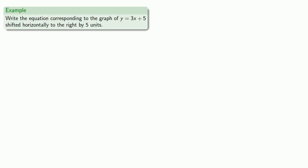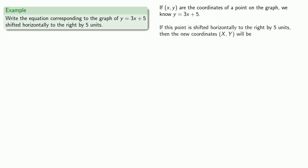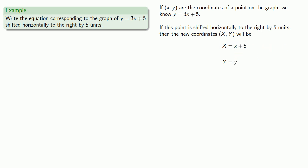Let's try to write the equation corresponding to the graph of y equals 3x plus 5 that's been shifted to the right by 5 units. If x, y are the coordinates of a point on the graph, we know that y equals 3x plus 5. If we shift this point horizontally to the right by 5 units, then the new coordinates, capital X and Y, will be where we've increased our original x-coordinate by 5, but because this is a horizontal translation, we haven't changed our y-coordinate.